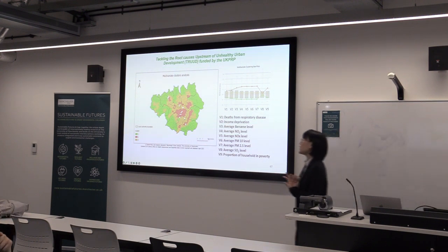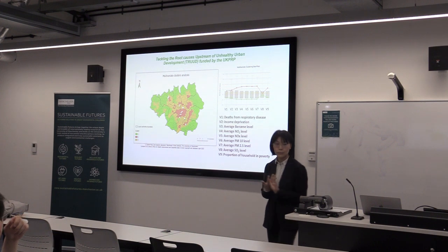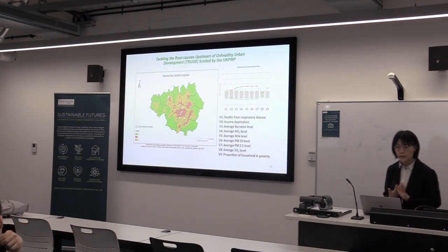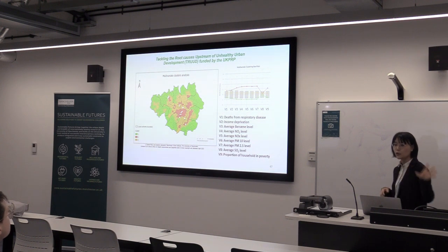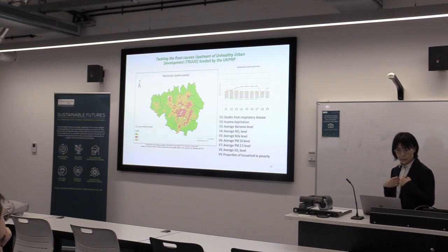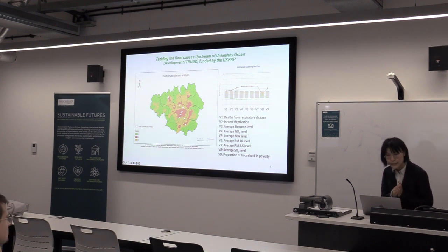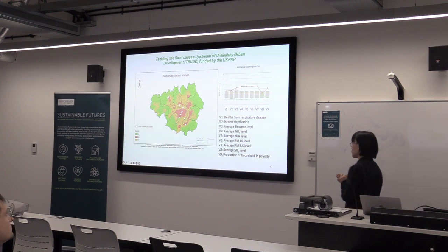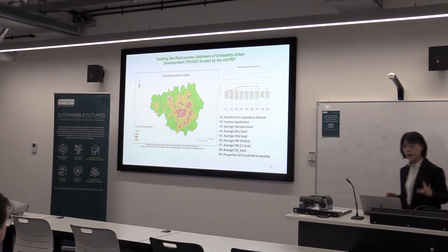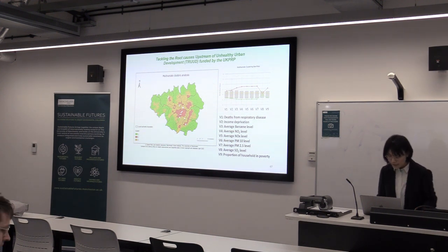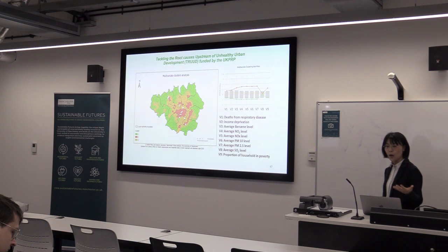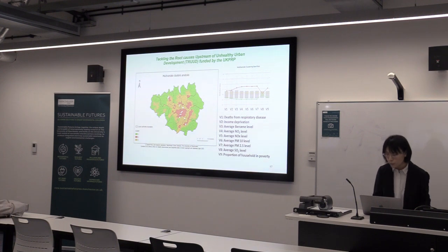We can also link different indicators to run multivariate cluster analysis to identify some clusters that need more policy intervention. For example, the red color represents areas that have a higher death rate from respiratory disease, higher income deprivation, household poverty, and also some air pollution issues. That is something we can use to talk with policymakers to make them aware of this spatial inequality.